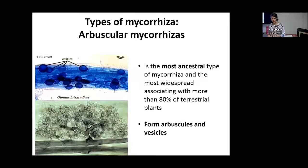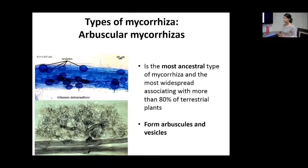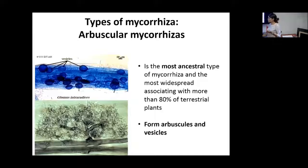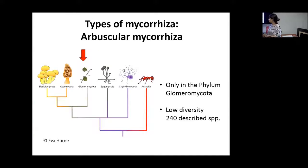There are two main types of mycorrhizal. One is the arbuscular mycorrhizal, which is the most ancestral mycorrhizal association and is found in most terrestrial plants — about 80% of plants have this type. They form two main types of structures: vesicles and arbuscules. The arbuscules are the main organ where the exchange of nutrients and sugars happen. These are in the phylum Glomeromycota and have relatively low diversity, about 240 described species as of 2013.